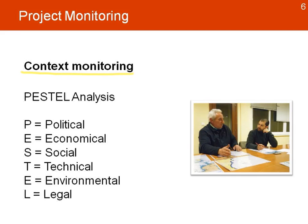One tool to help with context monitoring is the PESTEL analysis, which helps us look at the context in several areas. The political environment has an influence in terms of the people, parties, groups, or local governments supporting the project. Economic elements include price fluctuations and factors that will drive or challenge some of the project results. Social dynamics between groups and beneficiaries is also an important element to monitor.